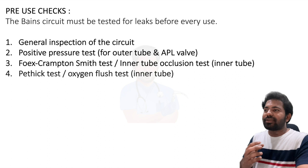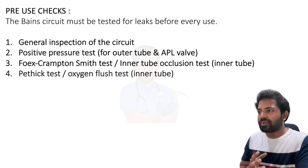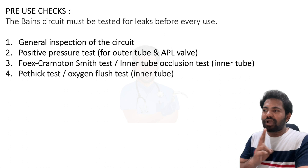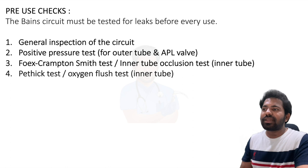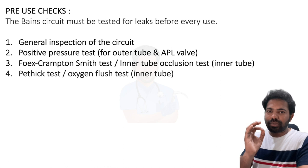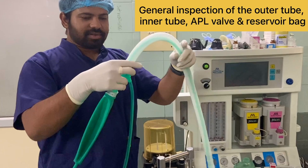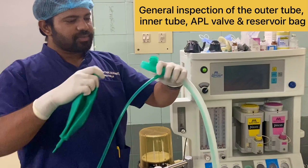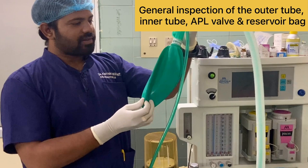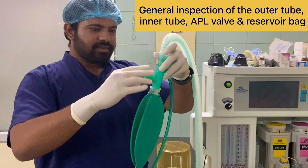Pre-use checks are very important. The Bain circuit must be tested for leaks before every use. First, perform a general inspection of the outer tube, inner tube, APL valve, and reservoir bag — look for any damage, kinking, or holes. Check connections of the reservoir bag, APL valve, outer tube, and TPS near the patient's end, and rotate the APL valve to check for connection problems. Also inspect the inner tube thoroughly.